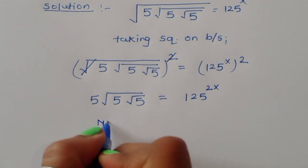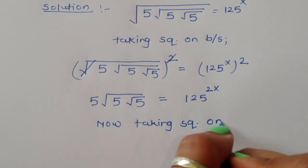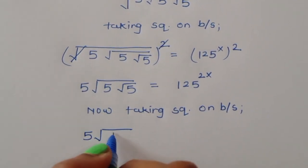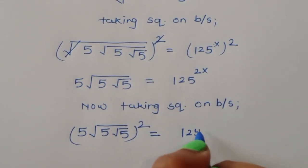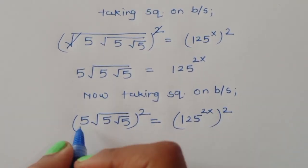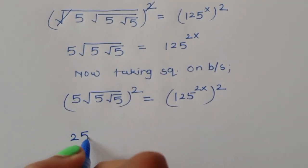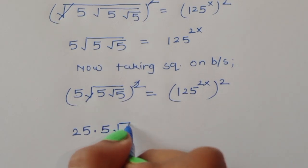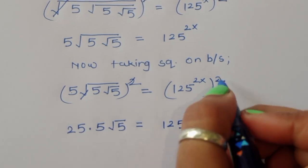Now again we have to take a square, so taking square on both sides we will get: 5 times square root of 5, whole square, is equal to 125 power 2x square. So 5 squared becomes 25, and the square cancels with the square root of 5, giving 25 times square root of 5 is equal to 125 power 4x.